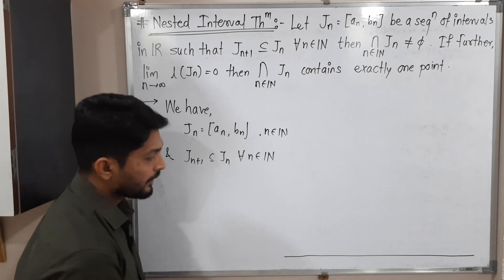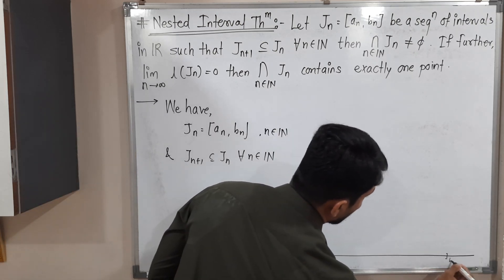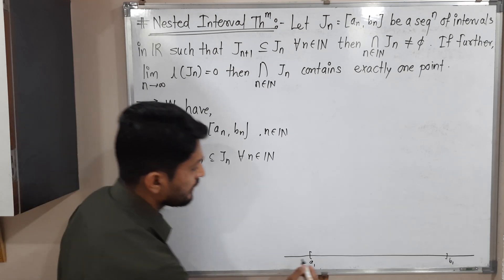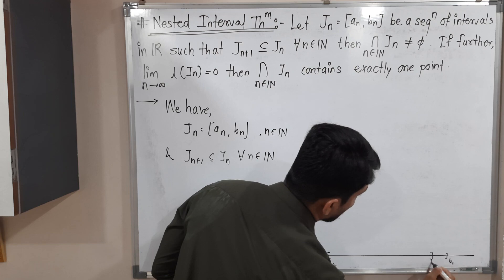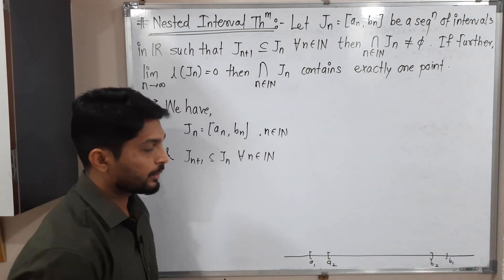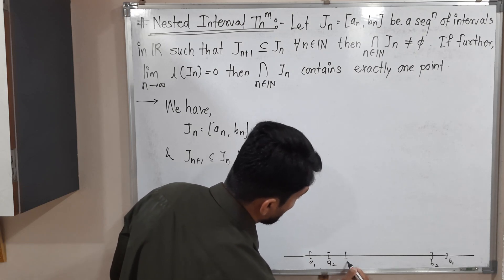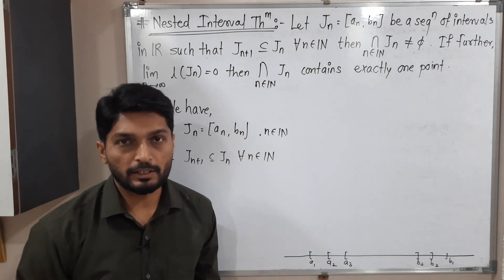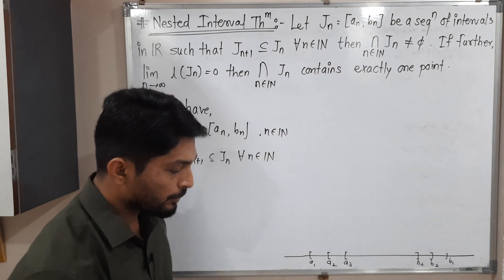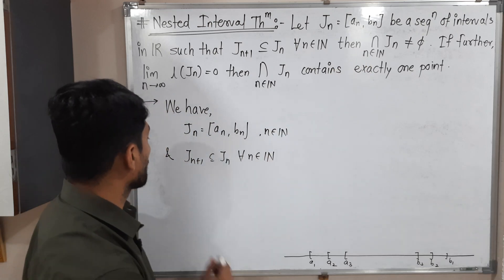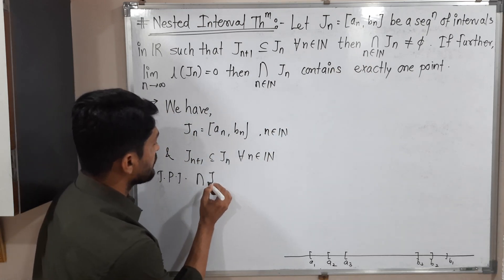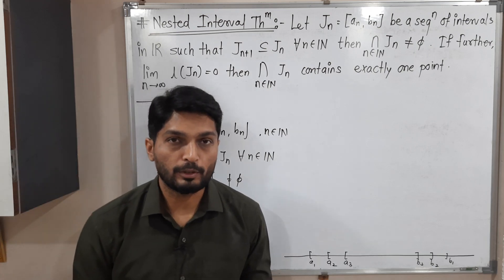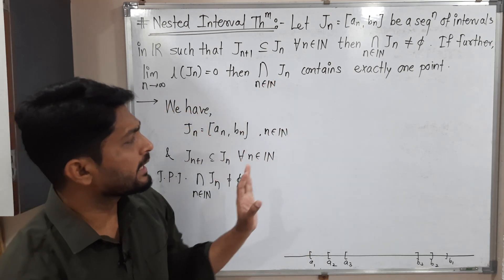Let me draw the diagram so the picture will be clear. On the real line, suppose a_1 and b_1 form the closed interval J_1. Then J_2 ⊆ J_1 with endpoints a_2 and b_2. J_3 ⊆ J_2 with endpoints a_3 and b_3, and so on for infinitely many intervals. What we have to prove is that the intersection of all J_n for n ∈ ℕ is non-empty.